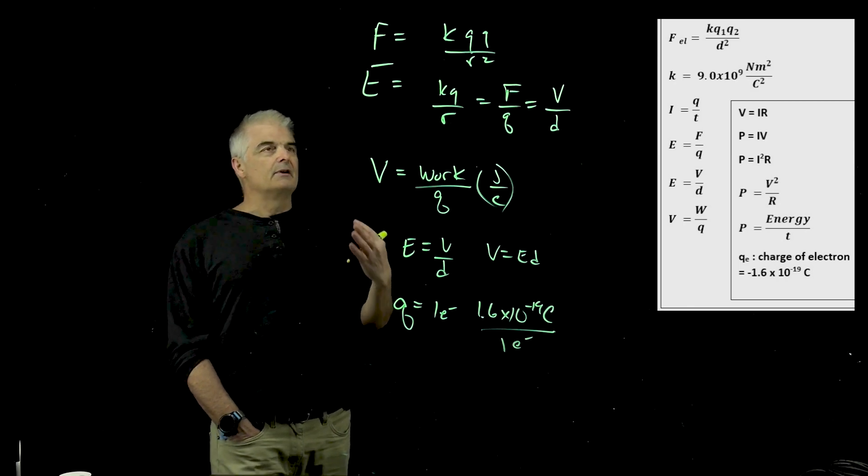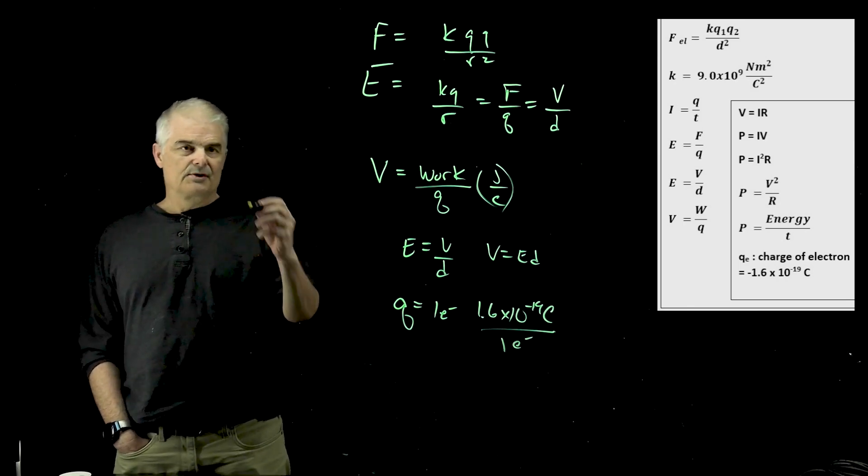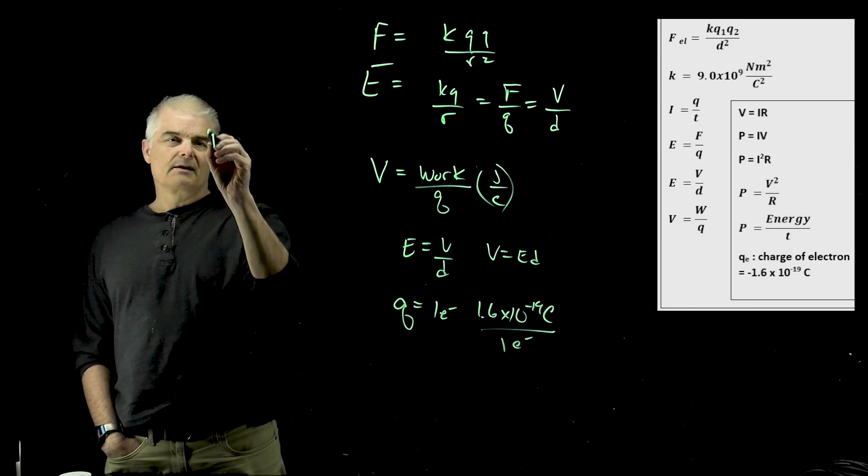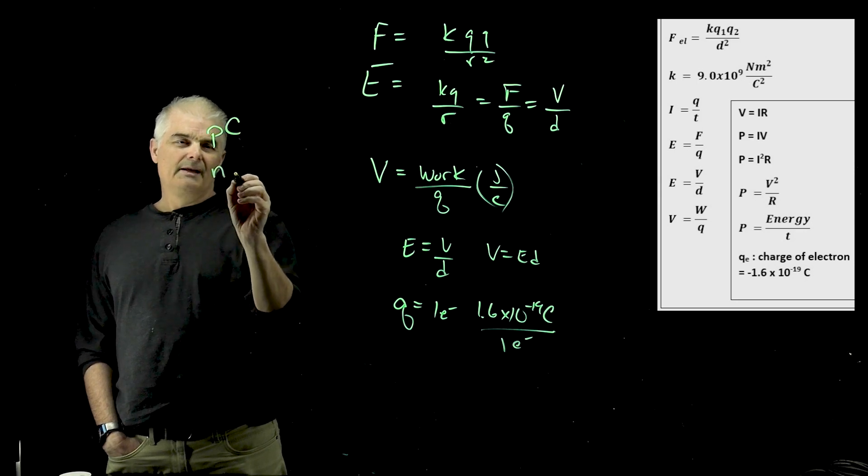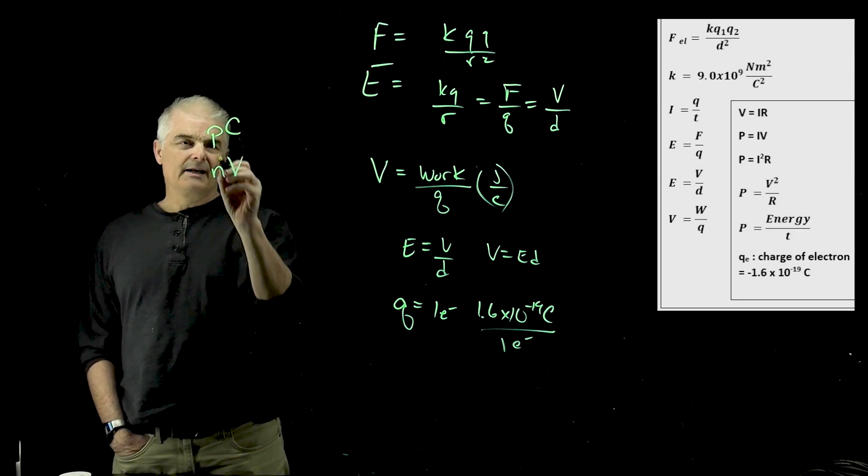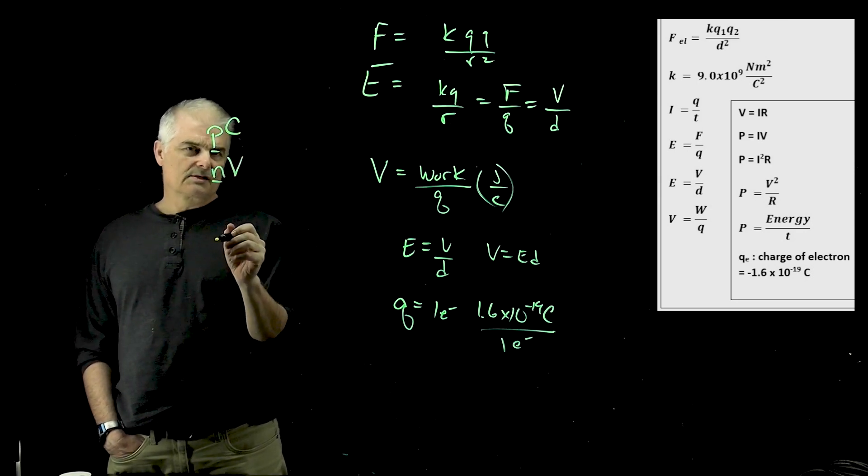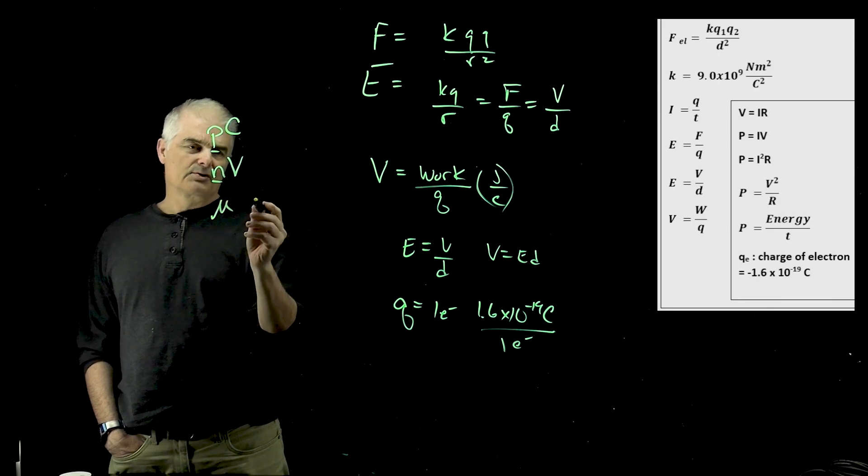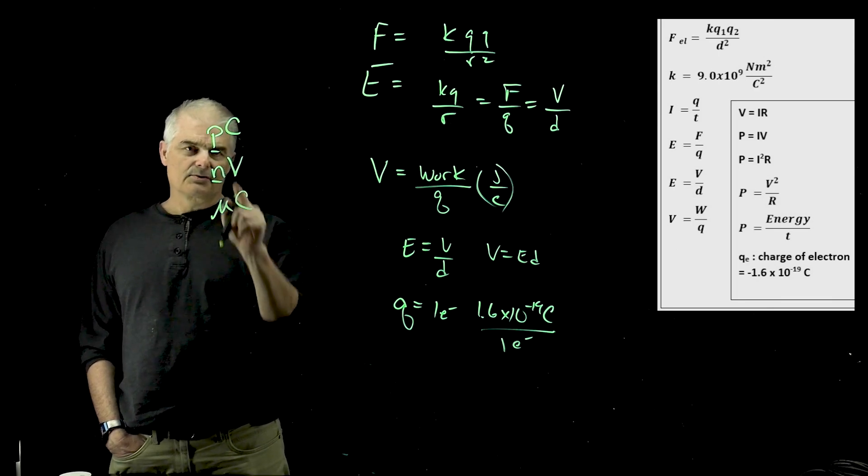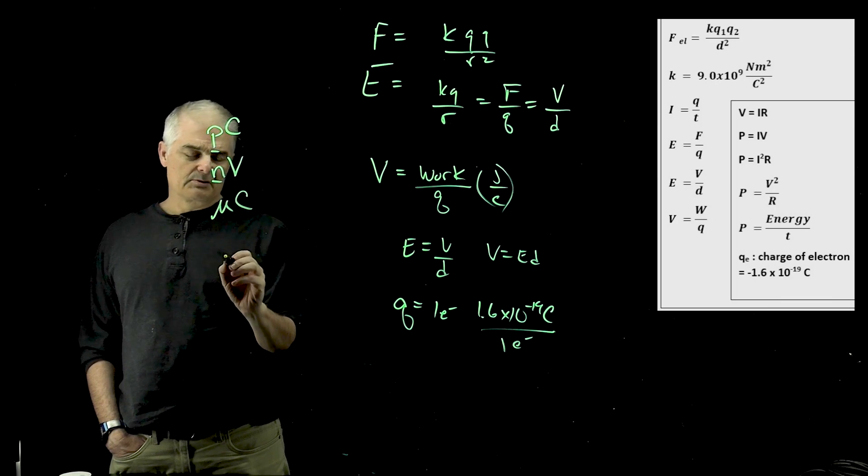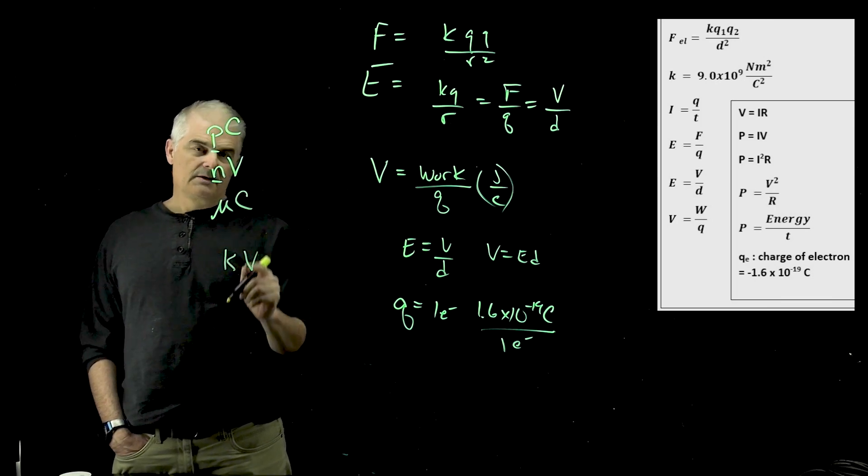And then also, very commonly in the problems that you're going to see, you're going to see something like picocoulombs or nanovolts or something like that, and you need to know what each of these symbols mean. You can make micro something, microcoulombs or something like that. So you see pico, nano, and then sometimes you even see kilovolts.